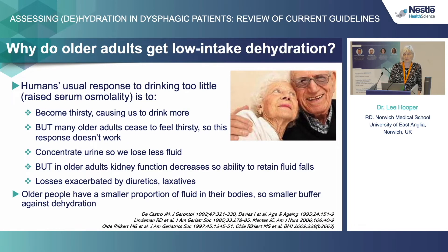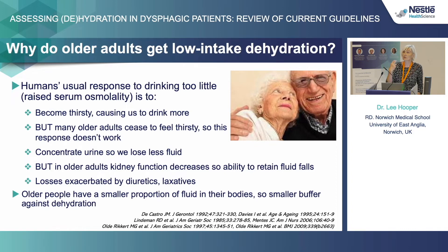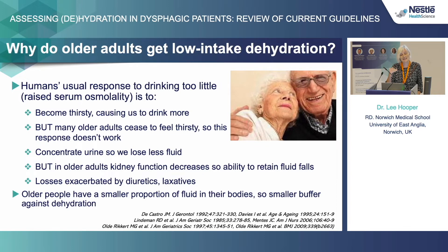Why is it so common? Our usual response to drinking too little — what you'll definitely see in children and most adults but not so much in older adults — is that with that serum osmolality rise, it triggers osmoreceptors in your brain to trigger thirst. So we should be thirsty, that means we drink more, and we correct the problem. The other thing that happens is it triggers our kidneys to conserve fluid better, meaning we lose less fluid. The trouble is in older adults, thirst doesn't get triggered in the same way, and kidney function is decreased, so that concentration doesn't happen — which exacerbates our losses and we don't correct the problem.